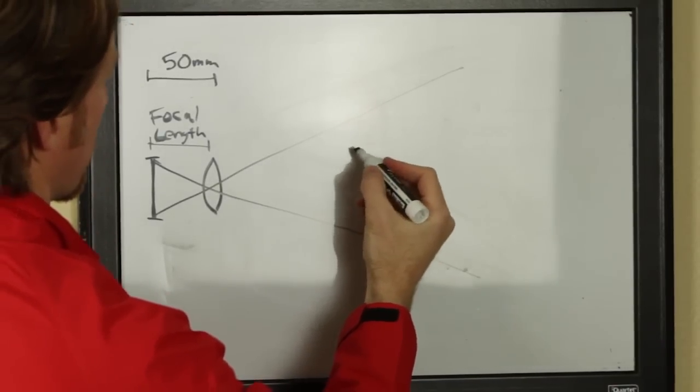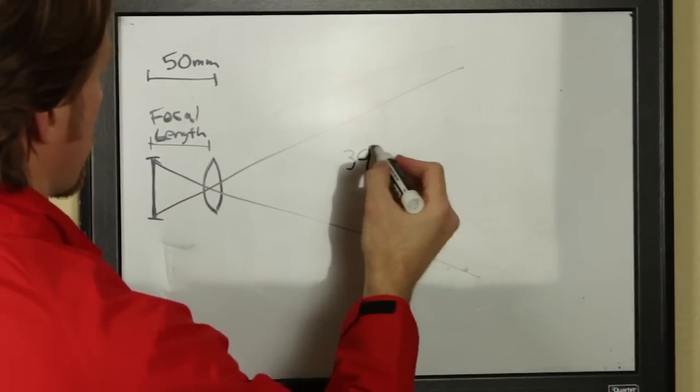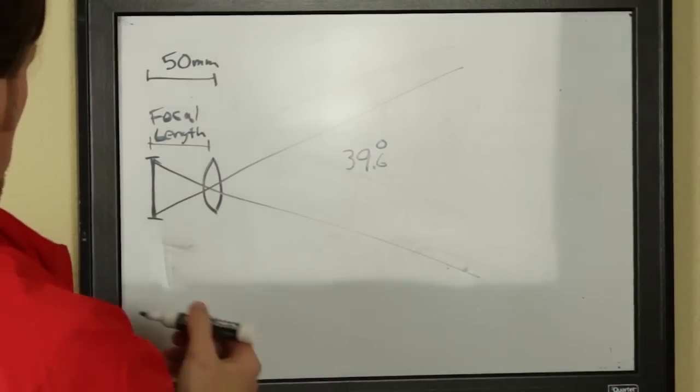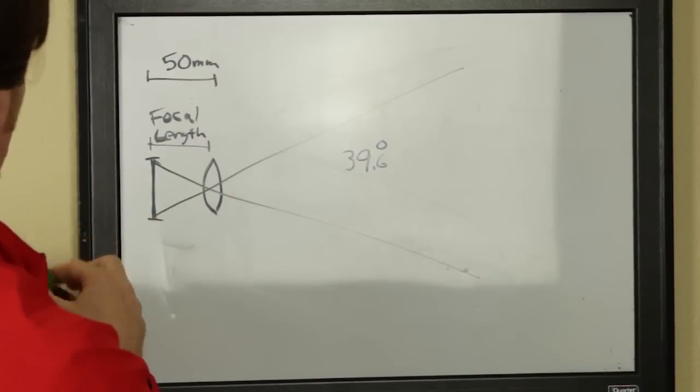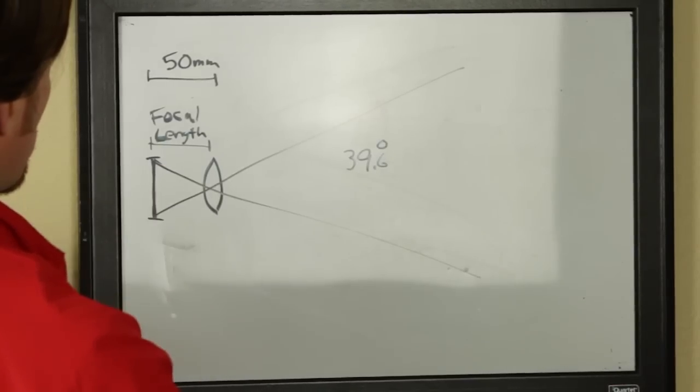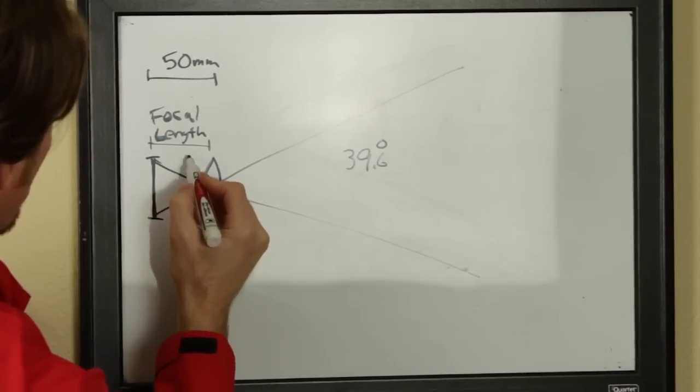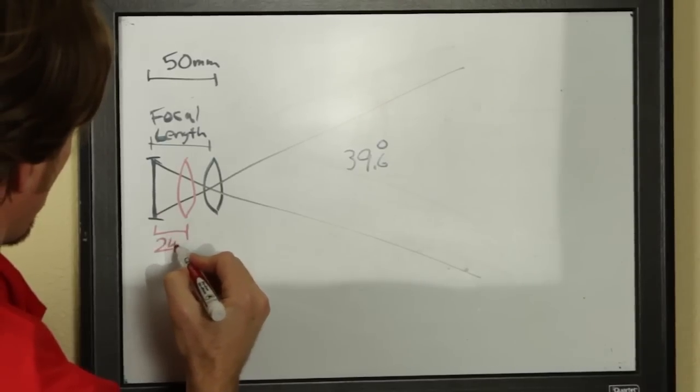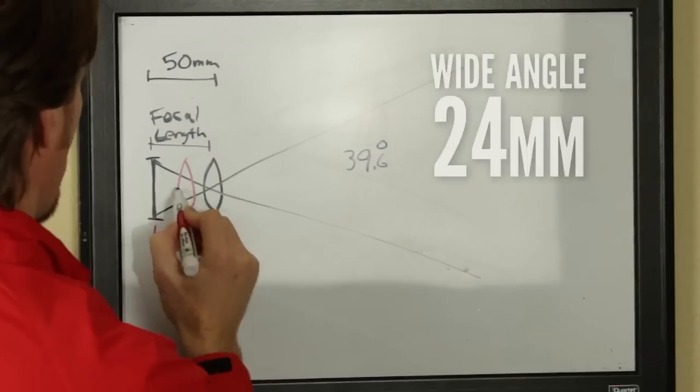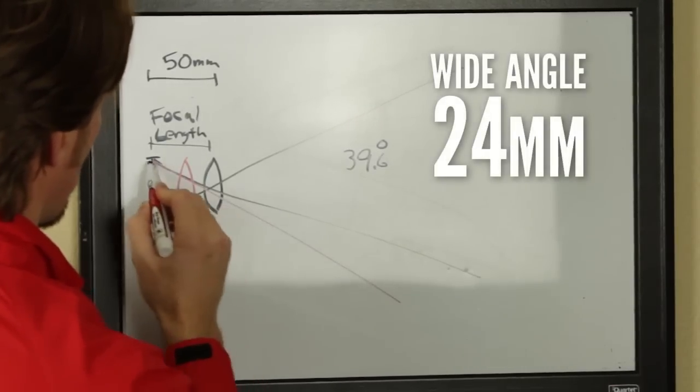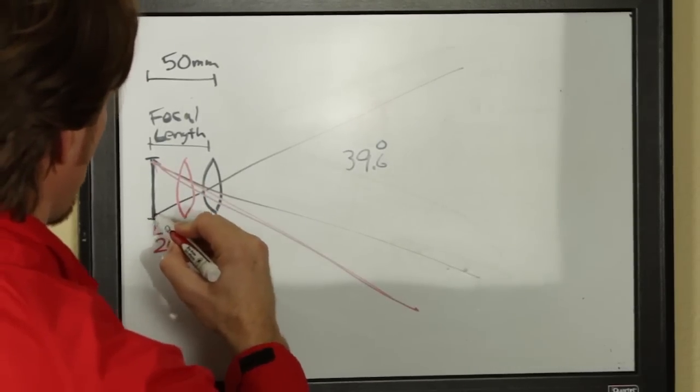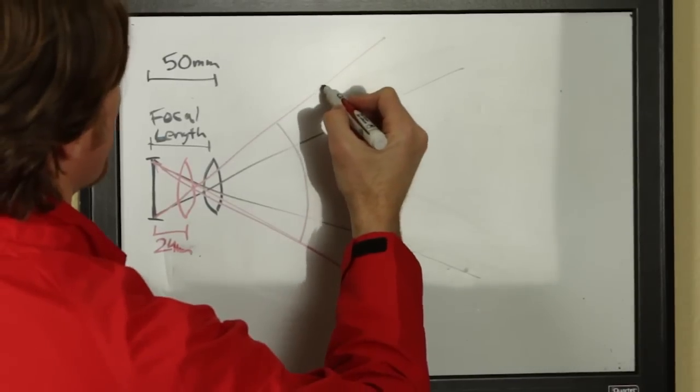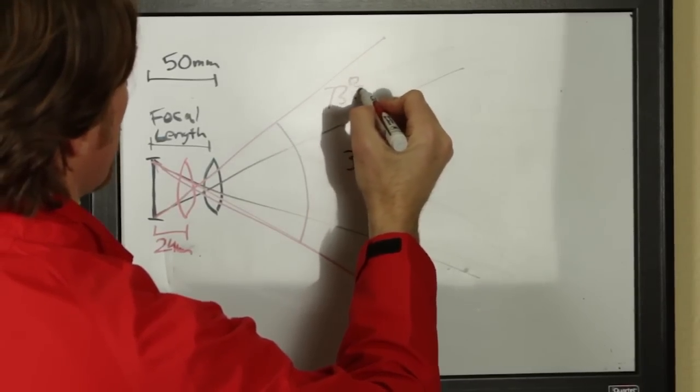And what that does is it gives you a certain angle of view. So with a normal lens that's just under 40 degrees like 39.6. Now if we have a lens that has a smaller focal length where we move that lens element closer, so let's say we have a 24mm lens, then what happens is the field of view if we draw it through that center of that lens element, the field of view is wider. So now we've got a much wider angle, in this case we're up to like 73.7 degrees horizontal angle of the frame of the actual image that you're capturing.